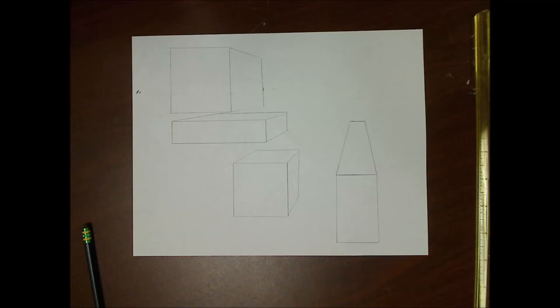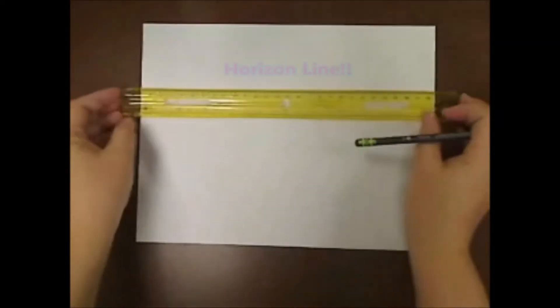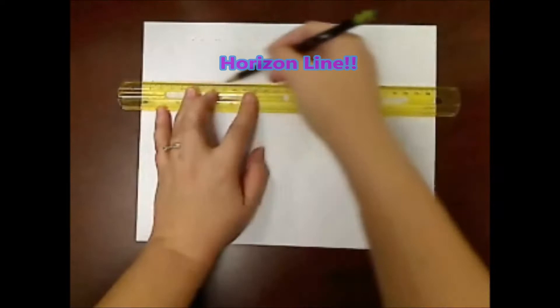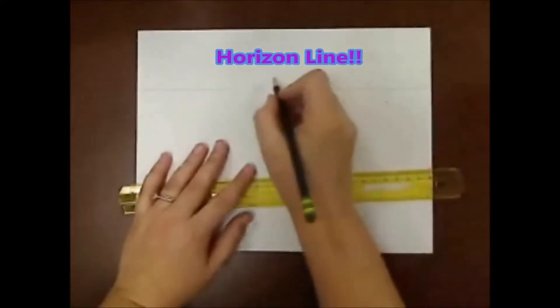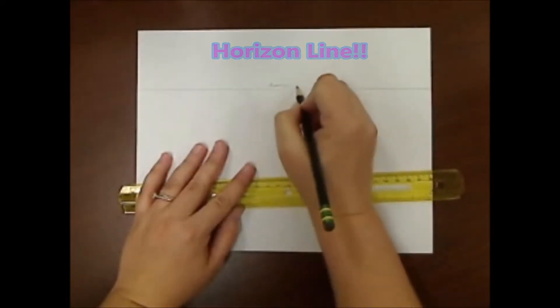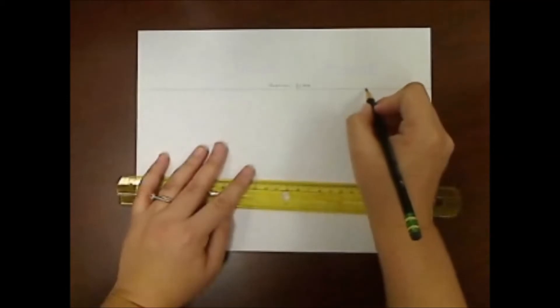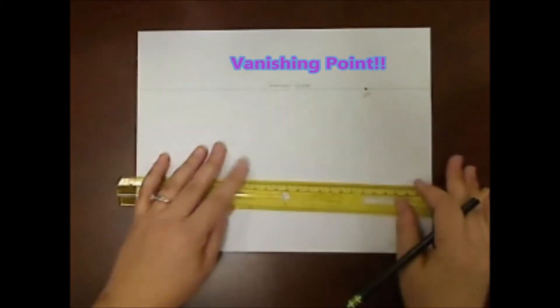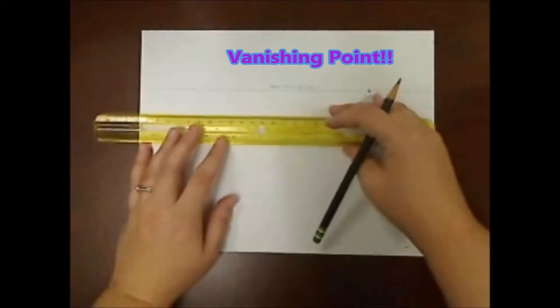Welcome to today's practice session on perspective. First we're going to need a trusty ruler and a pencil, then we're going to create our horizon line. Then we create a little dot called the vanishing point. We'll put VP for short.